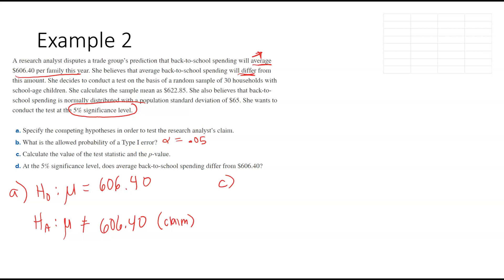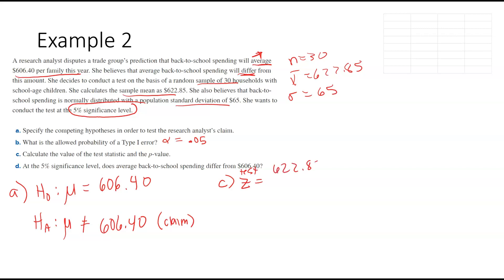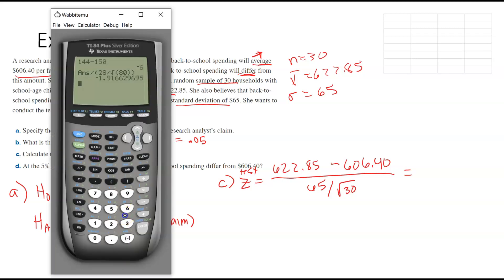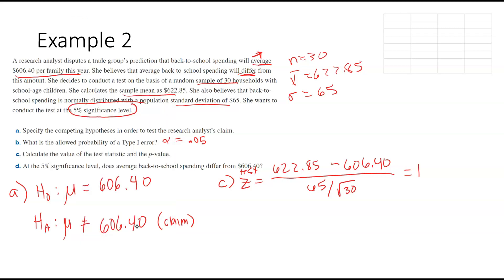Let's grab all our data. We have a random sample of n equals 30, sample mean x-bar equals 622.85, and population standard deviation of 65. Our test statistic z equals x-bar 622.85 minus 606.40, all over 65 divided by the square root of 30. Typing that in: 622.85 minus 606.4 divided by parenthesis 65 divided by square root of 30. Our test statistic is approximately 1.39.